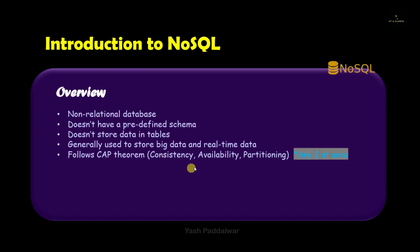NoSQL follows the CAP theorem, which stands for Consistency, Availability, and Partitioning. NoSQL cannot follow all three properties at a time — it has to follow any two of them. Since this is a very important topic, we will be covering CAP theorem in detail in the next video, along with the reason why it only follows any two of the three properties, illustrated with interesting examples.